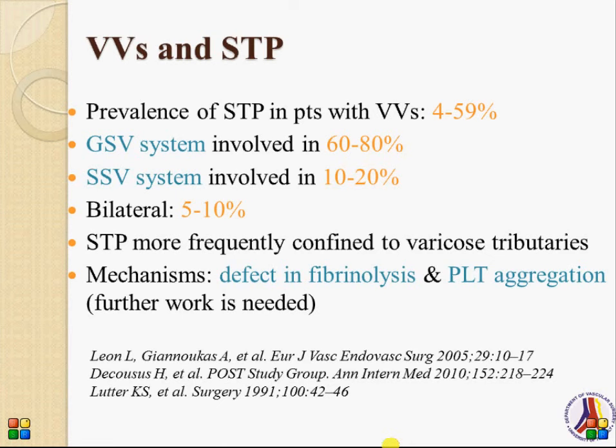The prevalence of superficial thrombophlebitis in patients with varicose veins has a wide range. It is more common when the great saphenous vein system is involved. It is bilateral in about 5-10%, and superficial thrombophlebitis involves more often varicose tributaries.